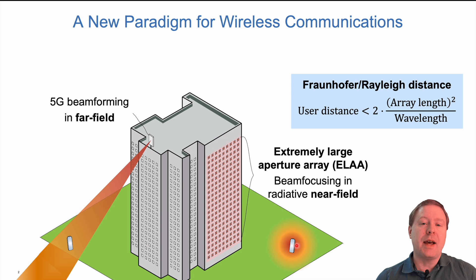The reason we are talking about this now is that the distance at which the user needs to be to see this kind of near-field effects is smaller than two times the array length squared divided by the wavelength. So as we make the arrays bigger and we shrink the wavelength, this so-called Fraunhofer or Rayleigh distance becomes longer, and most users will be at shorter distances.